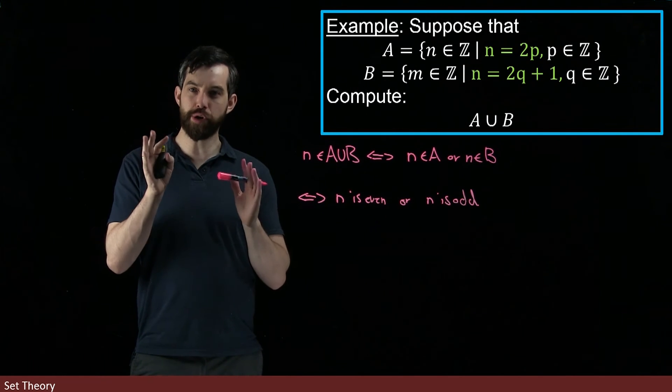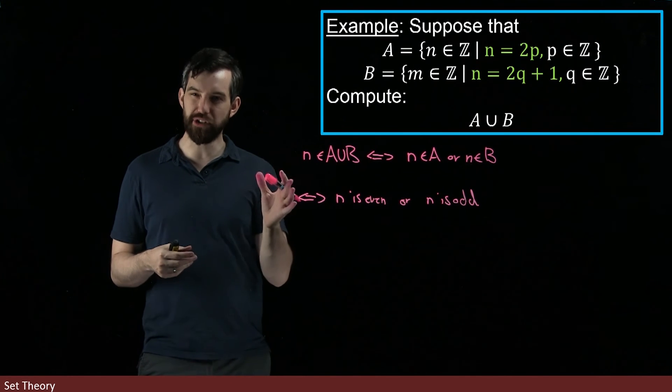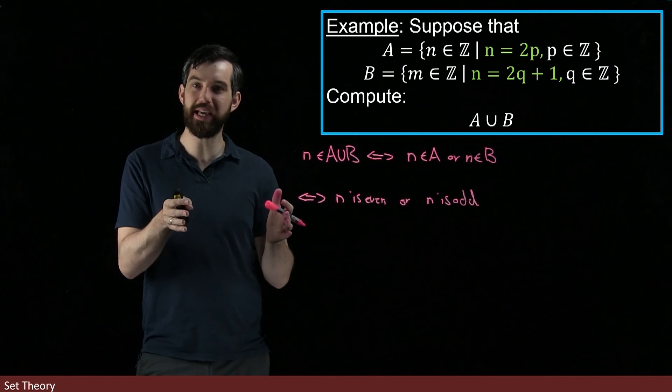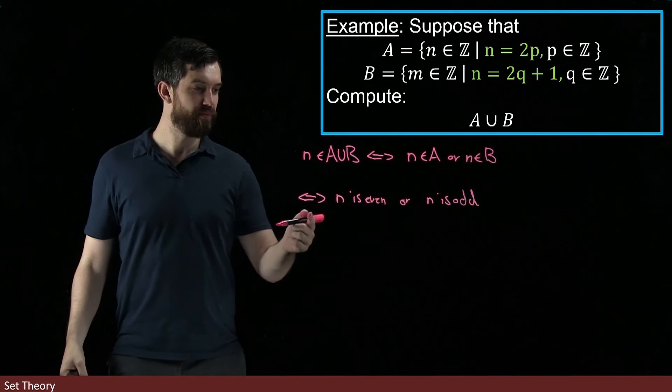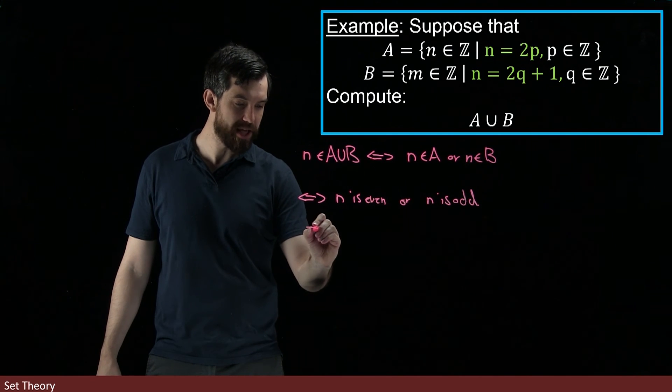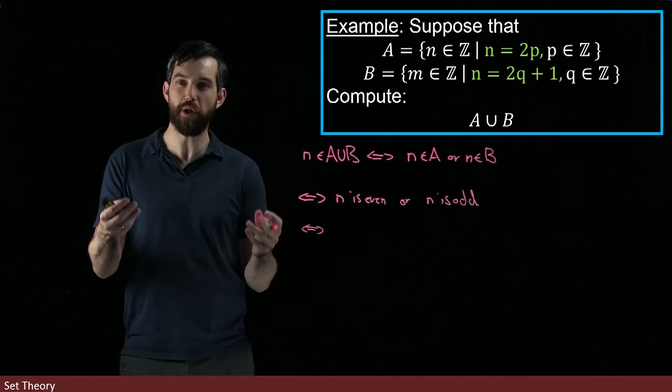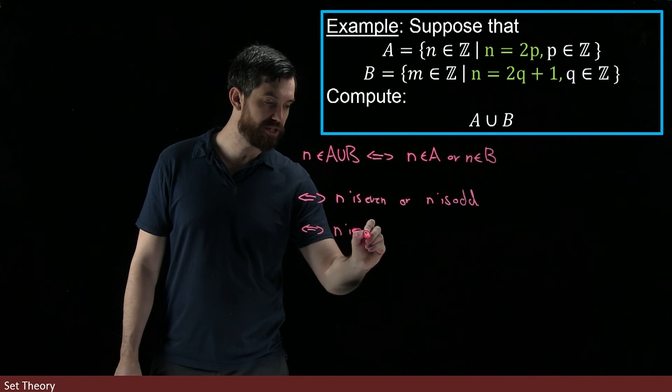Now one crucial fact about the integers here is that being an integer is equivalent to being either even or odd. And so this property 'n is even or n is odd' is, by quoting a previous result about the integers, the same thing as saying that n is an integer.